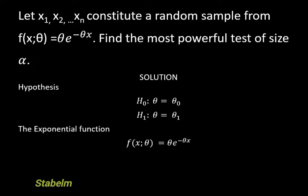The Neyman-Pearson most powerful test formula we're going to be using is: lambda equals the likelihood of theta-naught divided by the likelihood of theta-1, less than or equal to K.